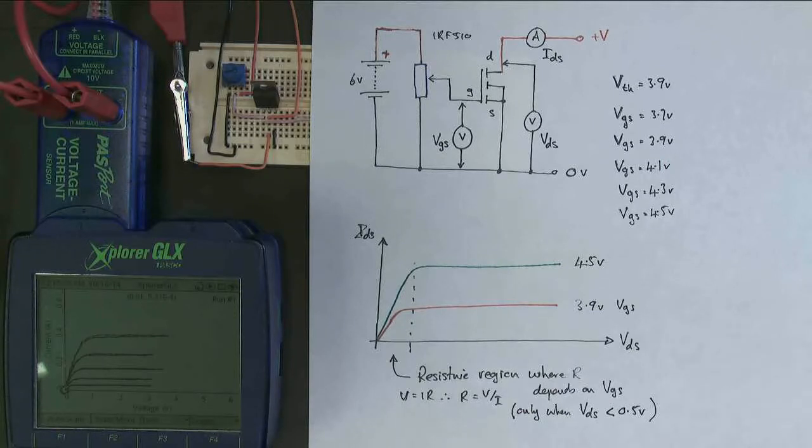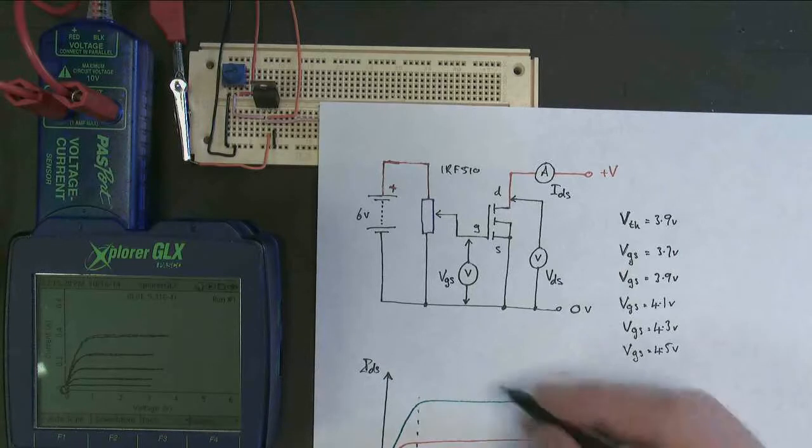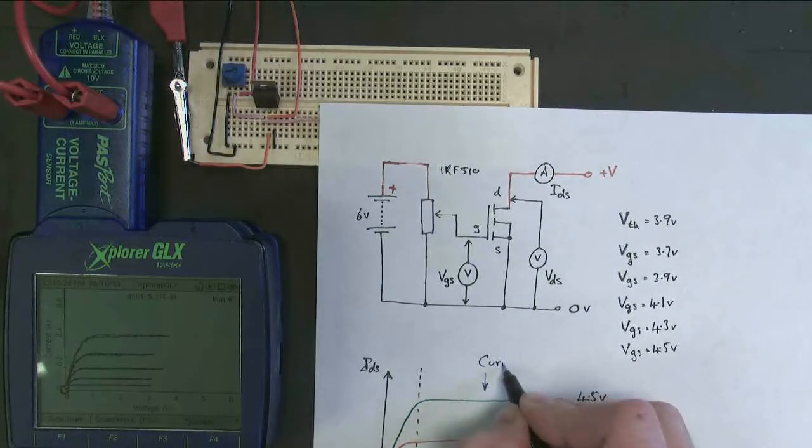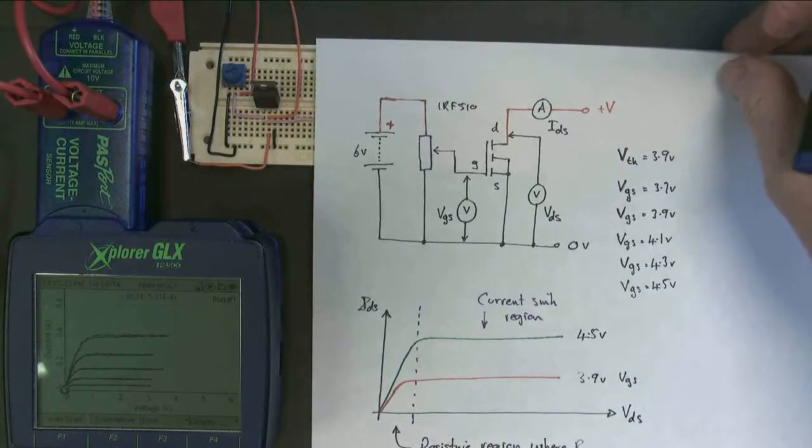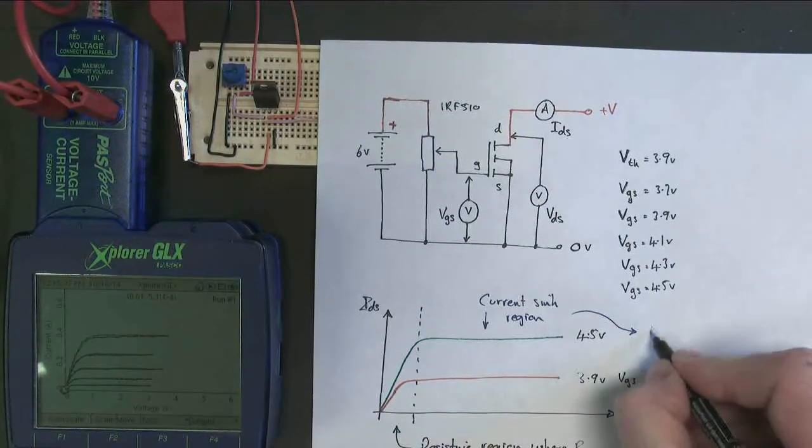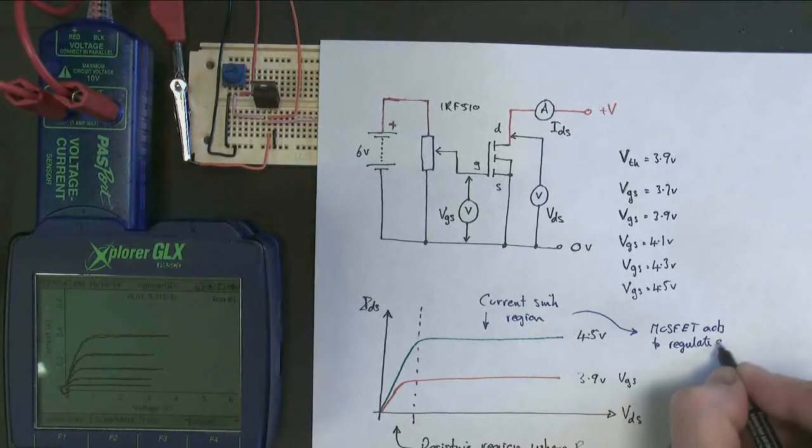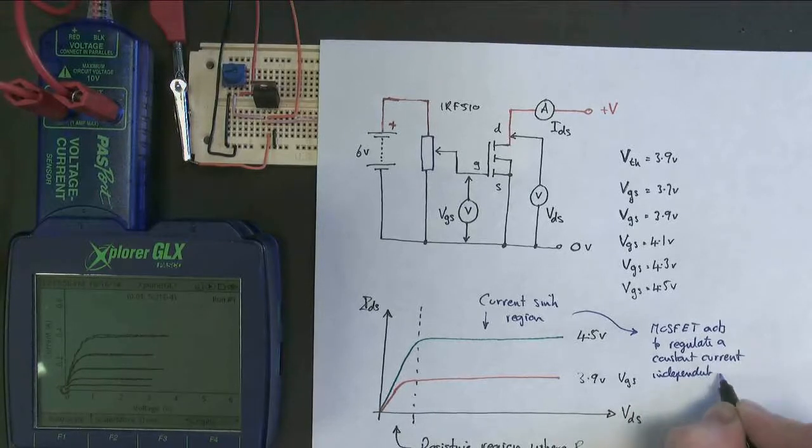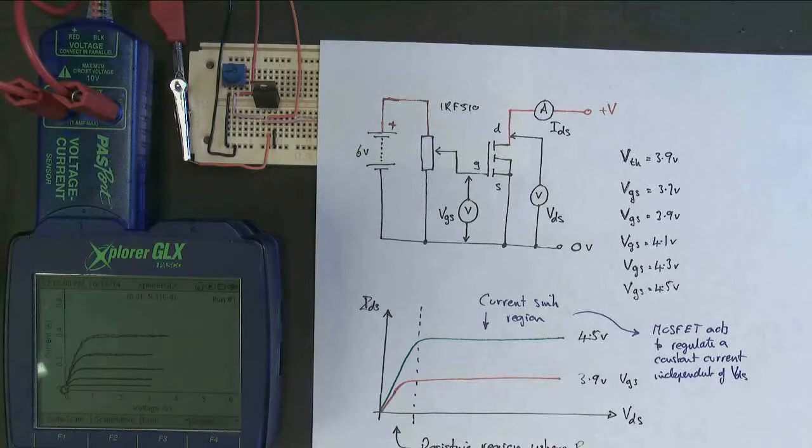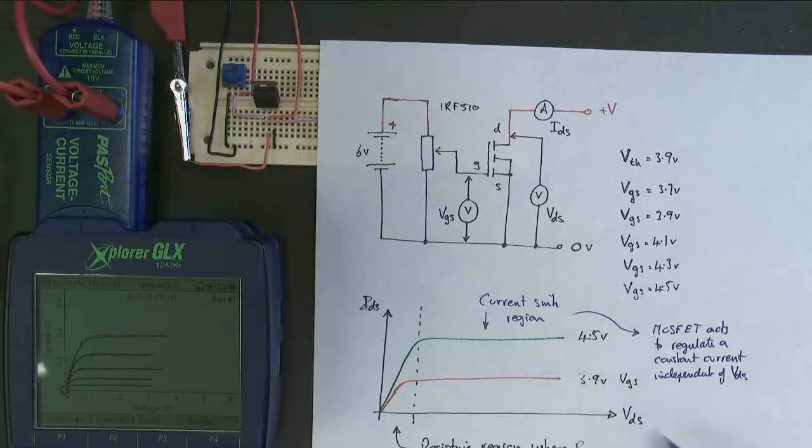What about for larger values? Well, for larger values of drain source voltage, we've got this region here. And what this region is here, this region is the current sink region. Now, what does this region look like? Well, it's flat. So what that means is that MOSFET acts to regulate a constant current independent of VDS. So unlike a resistor, where you increase the voltage, the current increases, in this region, this region here, you increase the drain source voltage and the current stays exactly the same. You get a constant current. And what does that constant current depend upon? Well, again, it depends upon the gate source voltage.